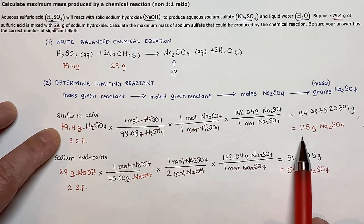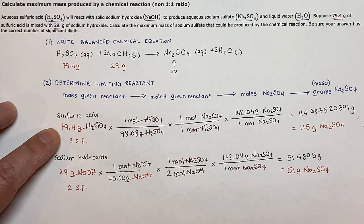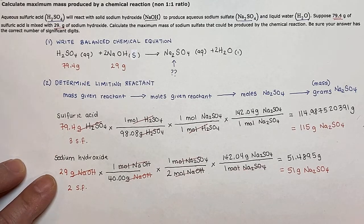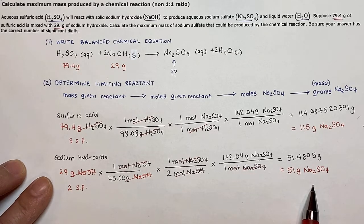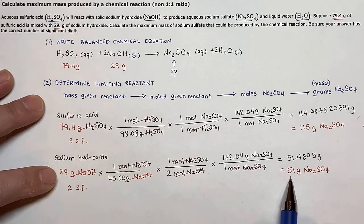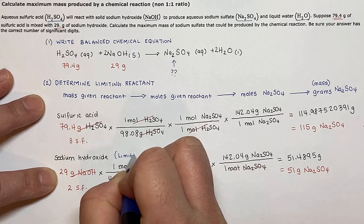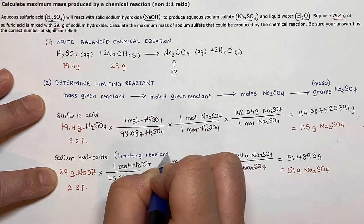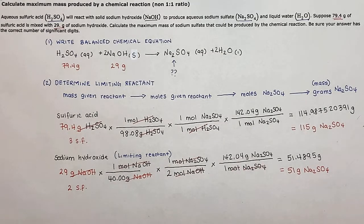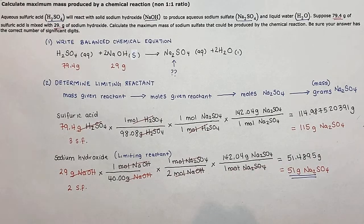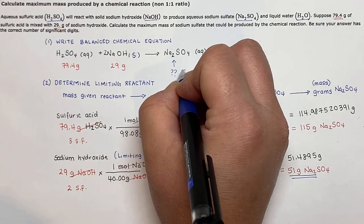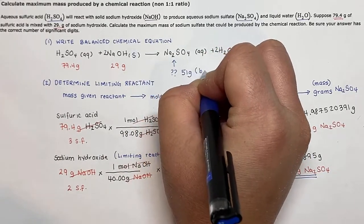When I have 79.4 grams of sulfuric acid, I can produce 115 grams of sodium sulfate. However, when I have 29 grams of sodium hydroxide, I can only produce 51 grams of sodium sulfate. The 29 grams of sodium hydroxide actually limits how much sodium sulfate can be produced, so sodium hydroxide is our limiting reactant. Since the limiting reactant controls the amount of product, the maximum amount of sodium sulfate we can produce is 51 grams.